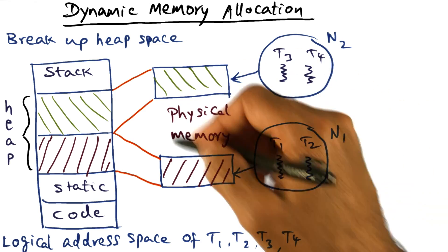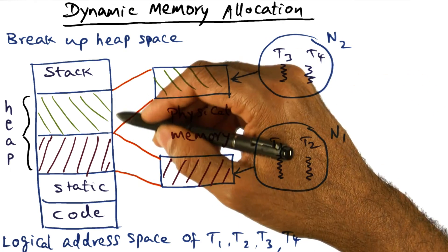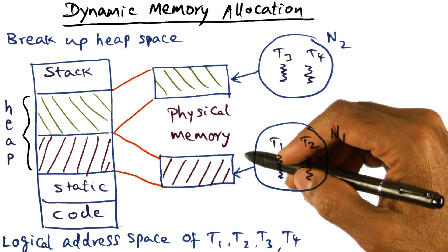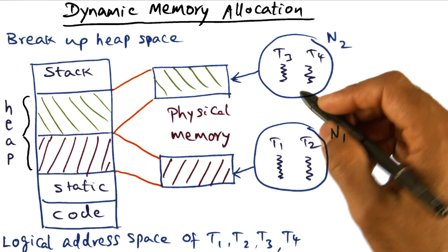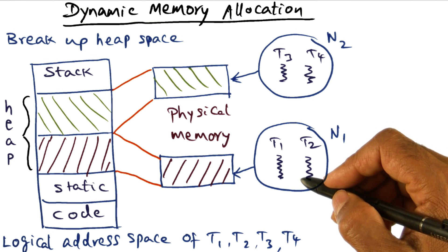The other side benefit that you get by breaking up the heap space into these distinct physical memories is that it can avoid false sharing across nodes of the parallel machine.